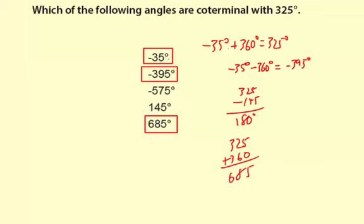The important thing here is to realize that a coterminal angle has some multiple of 360 degrees added or subtracted to it, so the initial side and terminal side are in the same location.